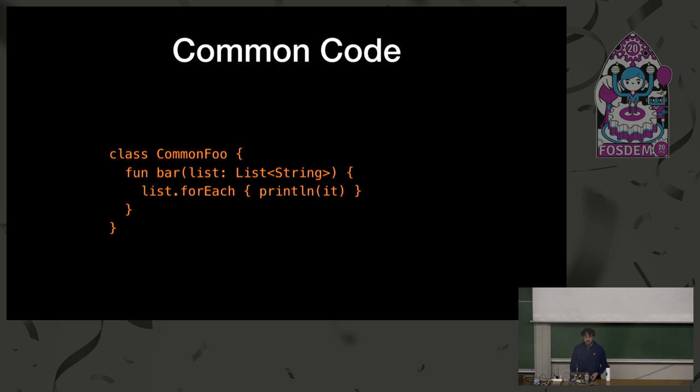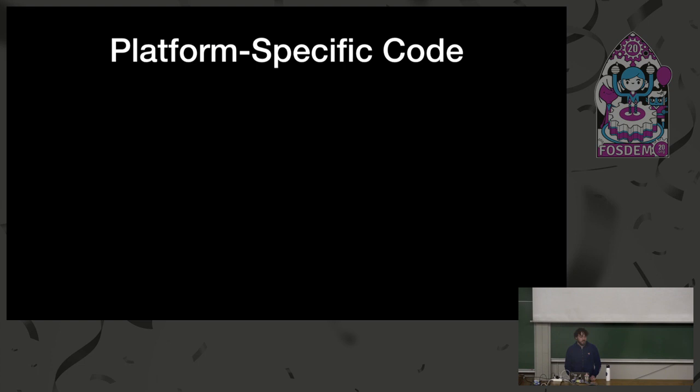So what does common code look like? It looks pretty much like any Kotlin code you write. From common, you have access to most of the stdlib you're used to, minus some platform-specific things. You can create classes, functions, and you have things like the collections API. When common isn't quite good enough, there are various strategies for platform-specific code to create whatever you need to interact with that platform.